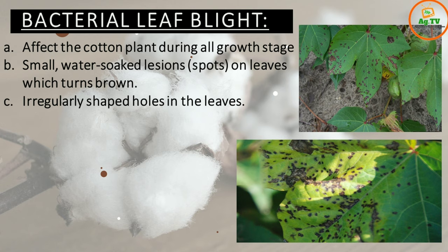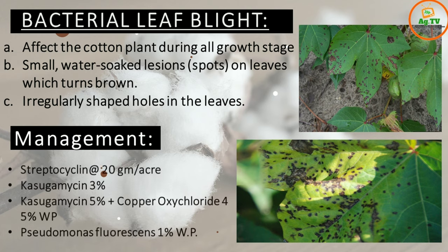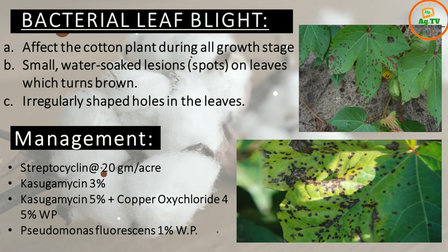Sometimes you can see irregular shade on the brown color, so you can identify bacterial leaf spots in this area. For management, if you have a bacterial infection, you can add antibiotics. If you have a single fungal infection, you can also add antibiotics or spray a single antibiotic.